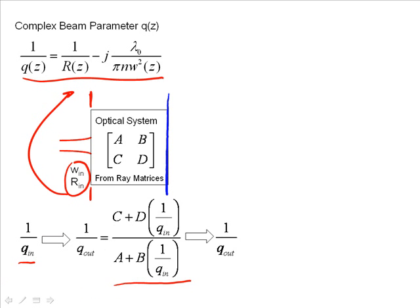The q parameter on the output plane is simply c plus d over q divided by a plus b over q, as shown in this formula right here. This gives us 1 over q_out.